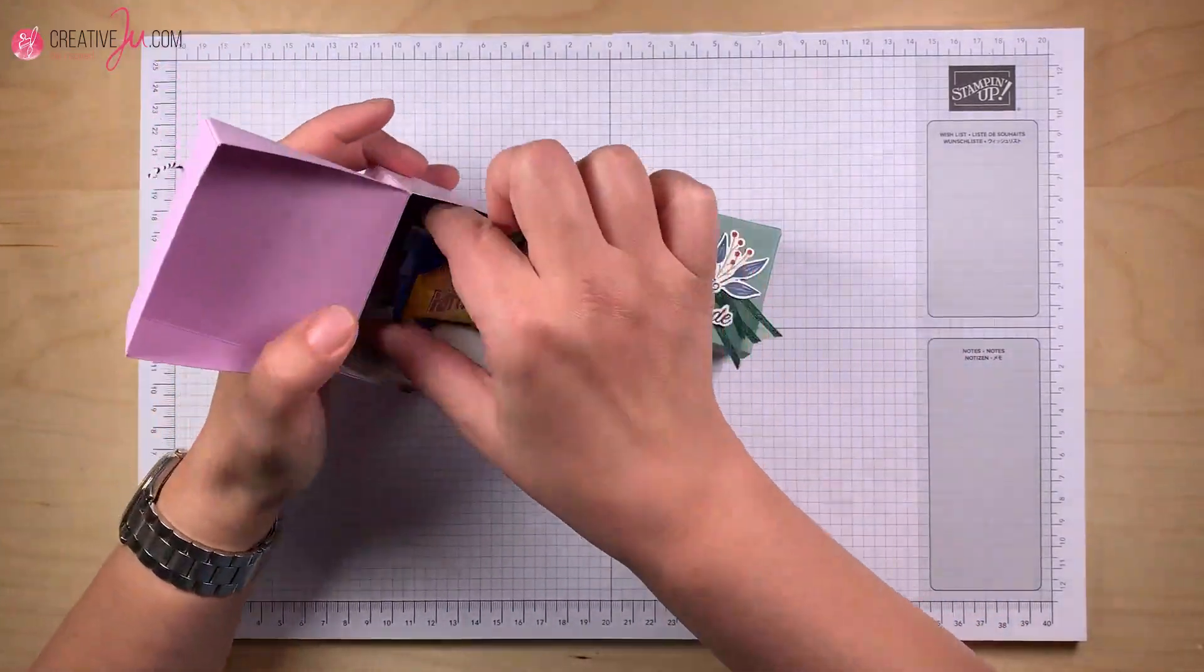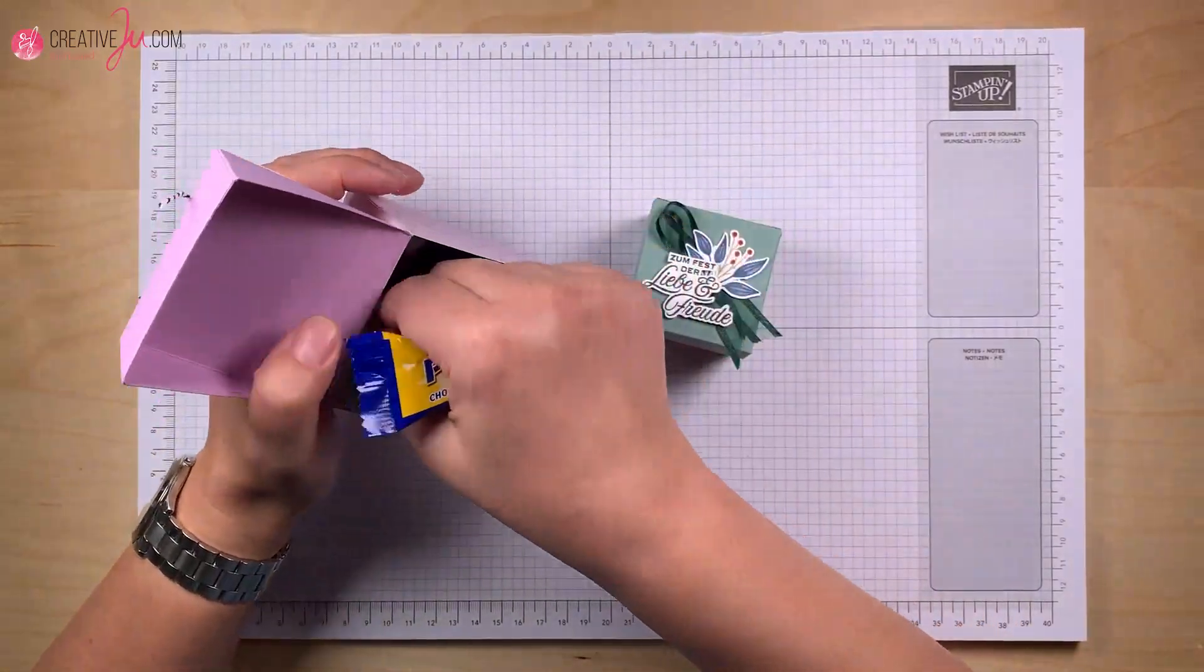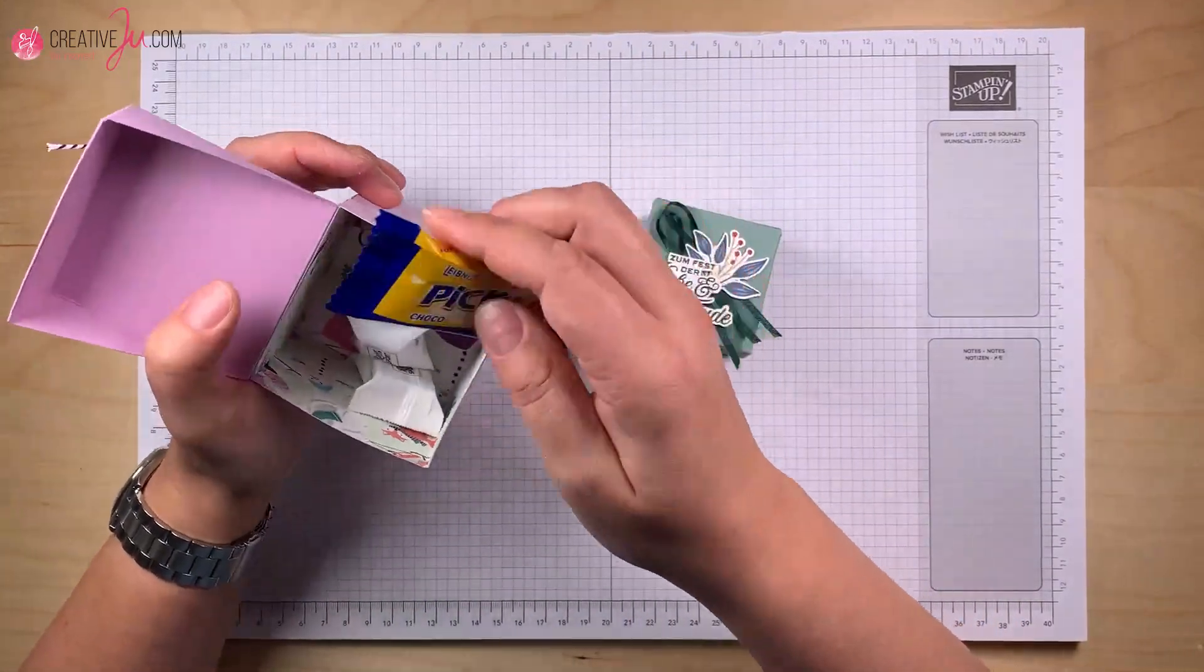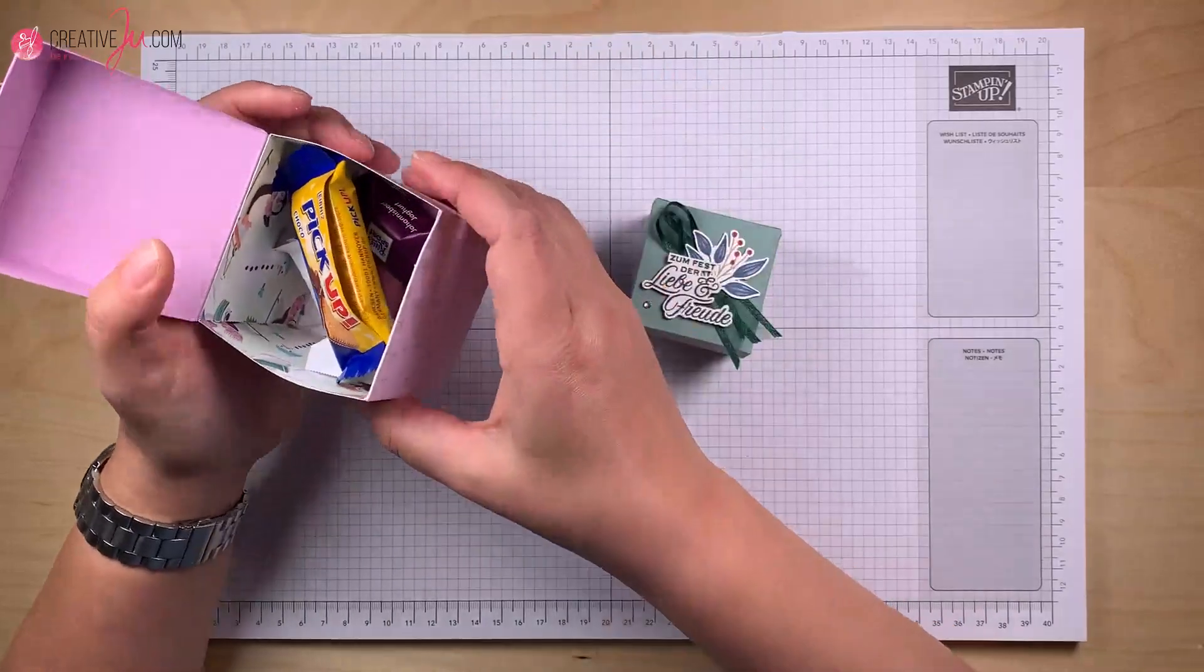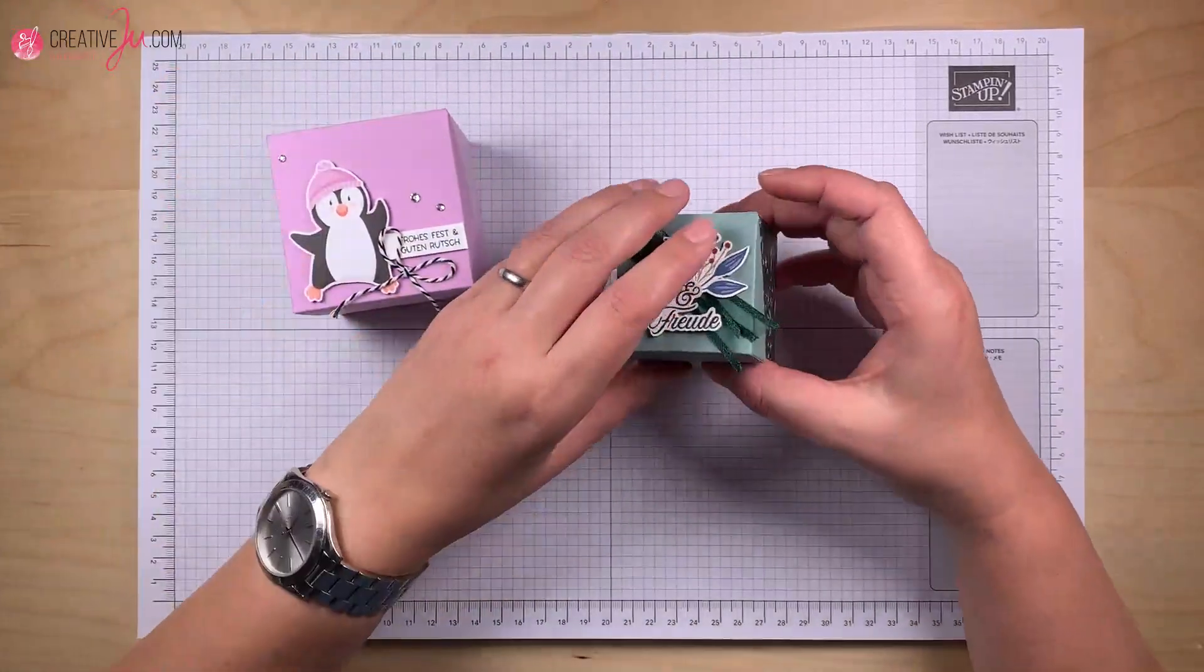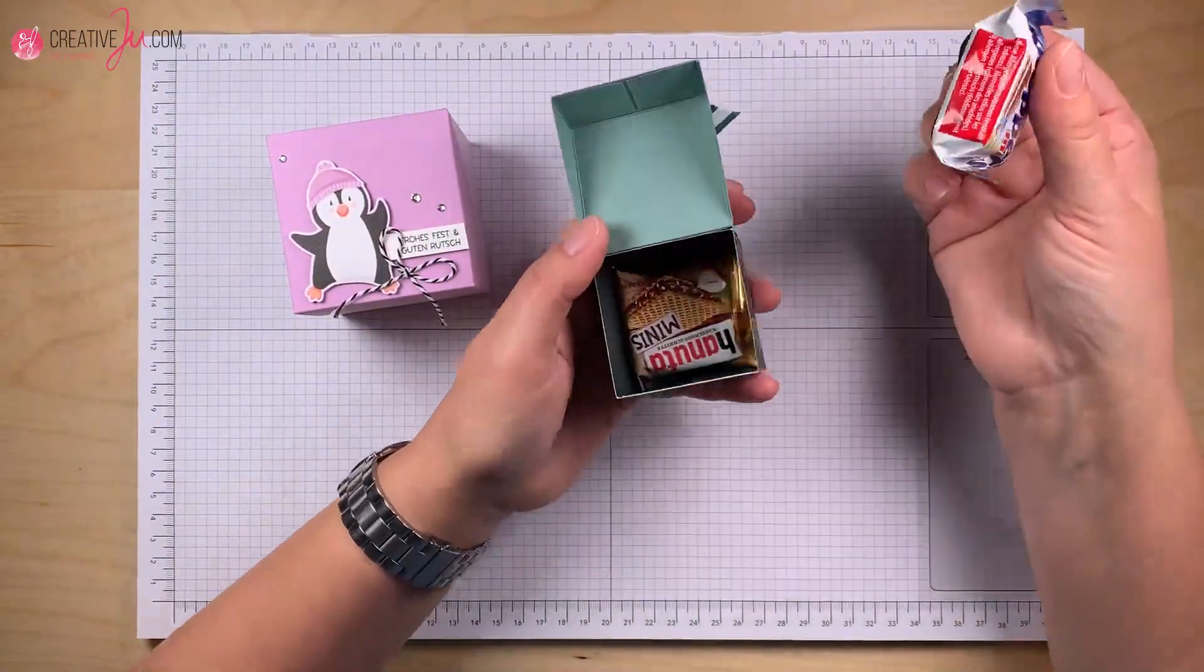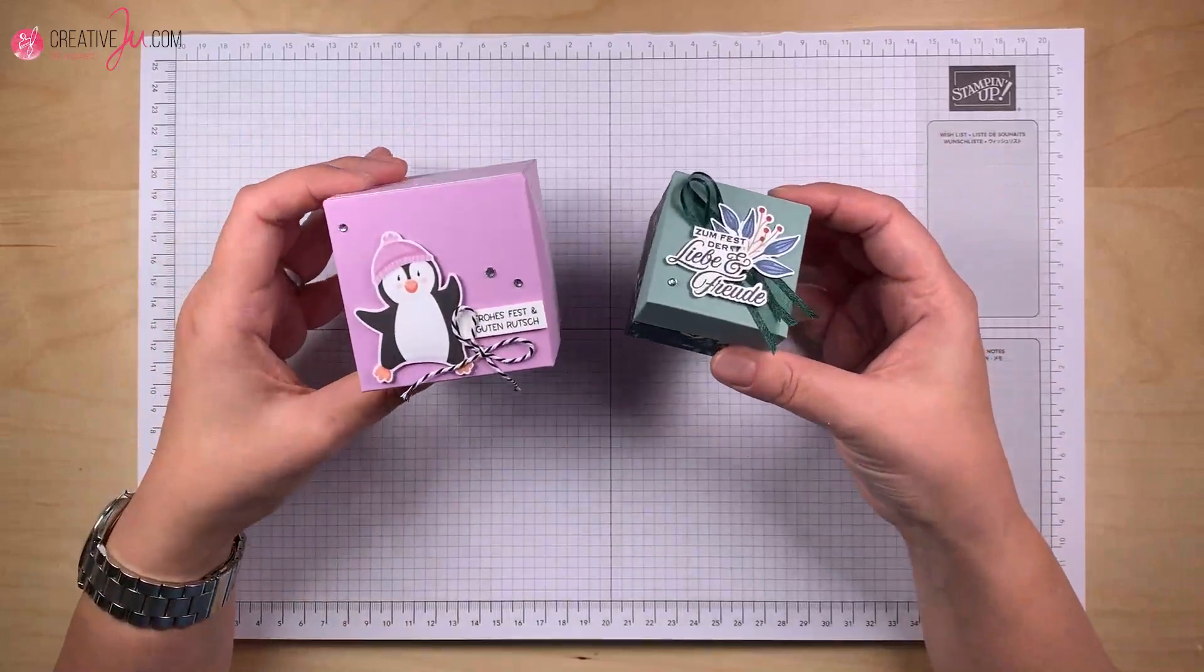Ich zeige mal, was da alles reinpasst. Hier passen einige Mini-Pickups oder diese Rittersportwürfel passen auch einige rein oder irgendein kleines Geschenkchen, Söckchen vielleicht. Und hier passen zwei Mini-Hannuthers oder zwei Mini-Knoppers. Also ganz praktische Größen. Das möchte ich euch gerne zeigen.